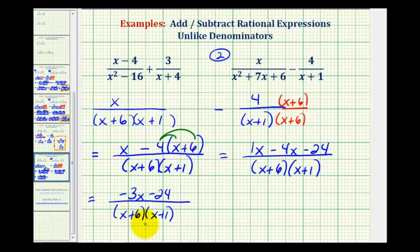Now we always want to see if we can try to simplify. To do this, we'll factor the numerator. And the greatest common factor here would be three, but let's factor out negative three. That would leave us with x plus eight.